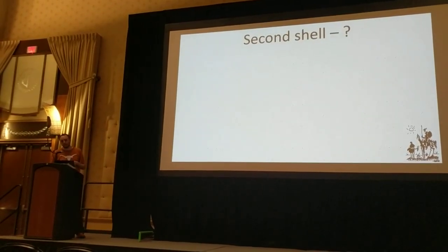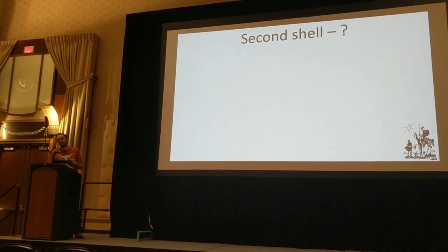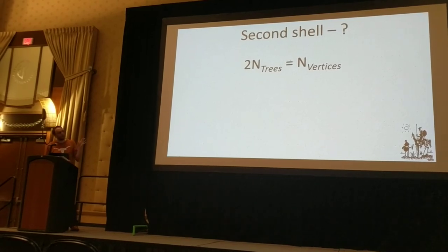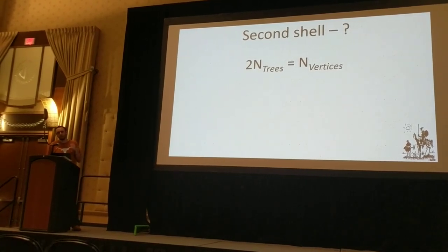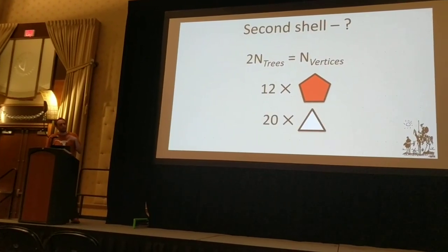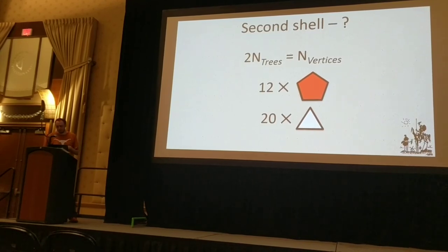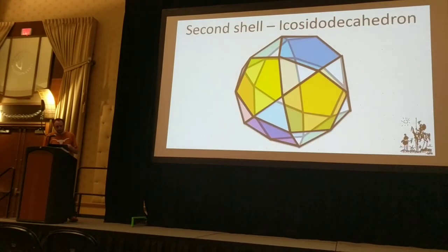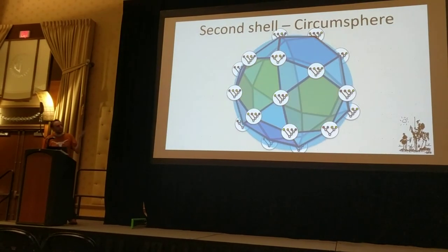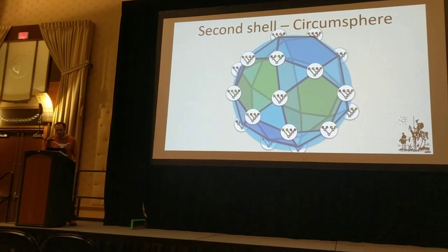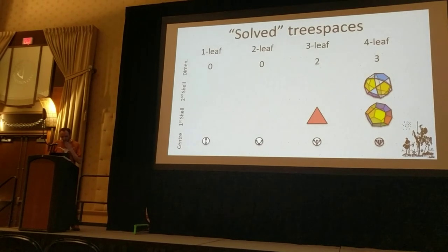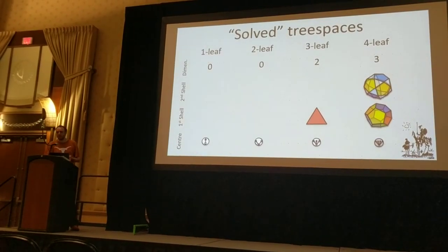Then we can go up to the second shell. We have a set of dodecahedron rules that tell us the solution: we want a shape where the vertices are twice the number of our trees, we want to preserve the dodecahedron-like structure we saw before, but we also now want triangles to represent those three zero-contradiction trees. We can do that with an icosahedron and project our trees back onto it — this also has a circumsphere. So this gets us basically solving the tall dodecahedron. This is unfortunately as far as I've gotten.